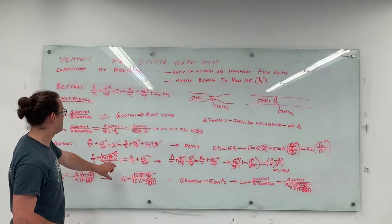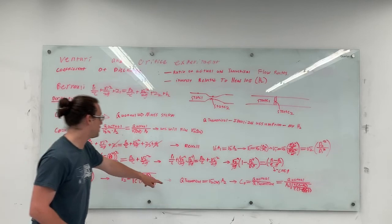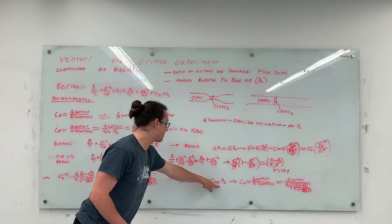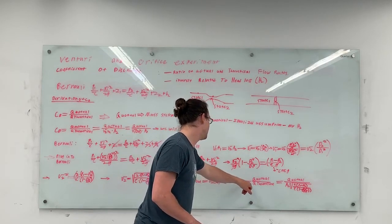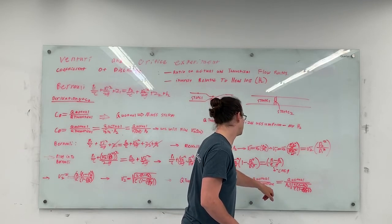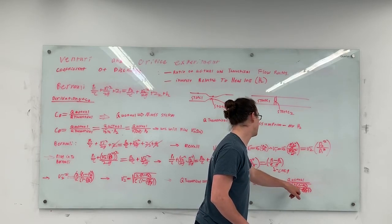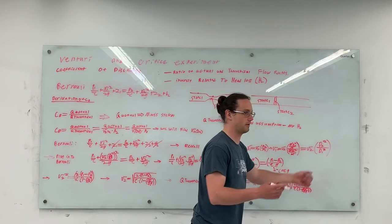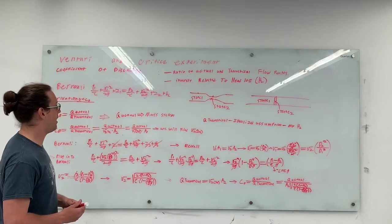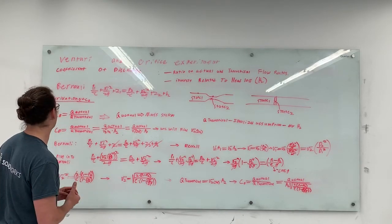Now that we have this v2, we call it v2 theoretical, since it came from the theoretical Bernoulli equation. So q theoretical equals v2 theoretical times a2. We can now plug that into cd: cd equals q actual over q theoretical, which equals q actual over a2 times the square root of 2 times (p1 minus p2) over rho times (1 minus d2⁴ / d1⁴). Hopefully this gives you a better understanding of where the coefficient of discharge comes from.